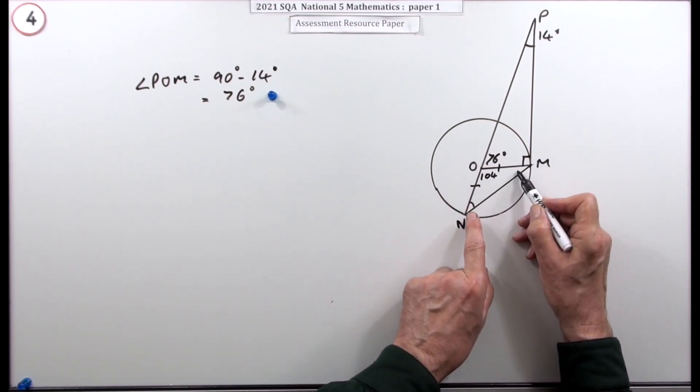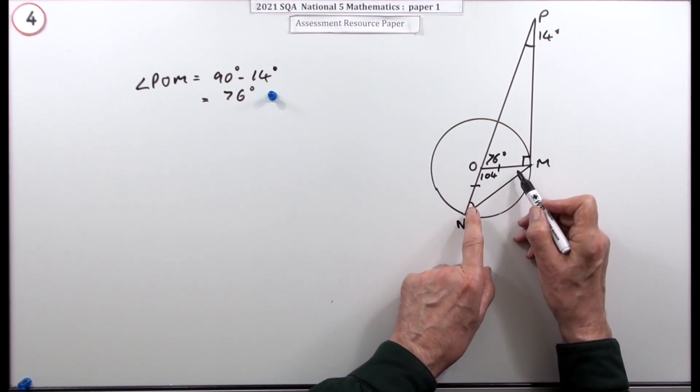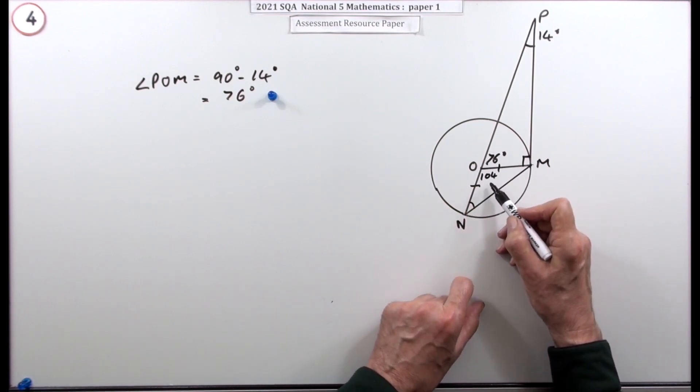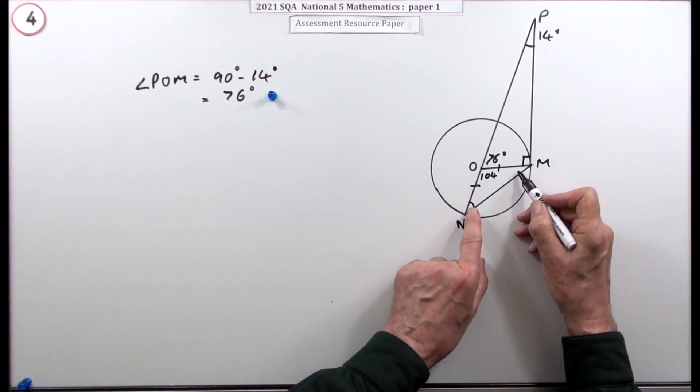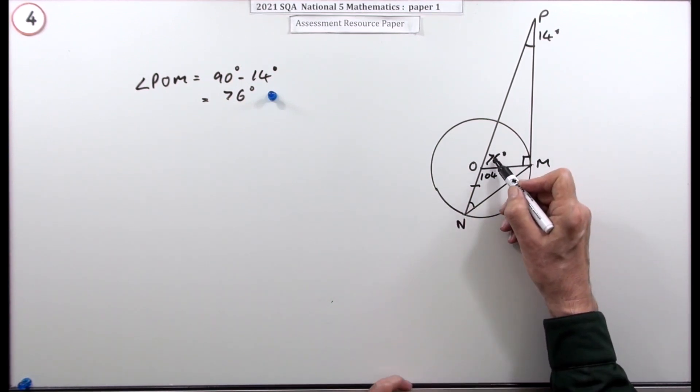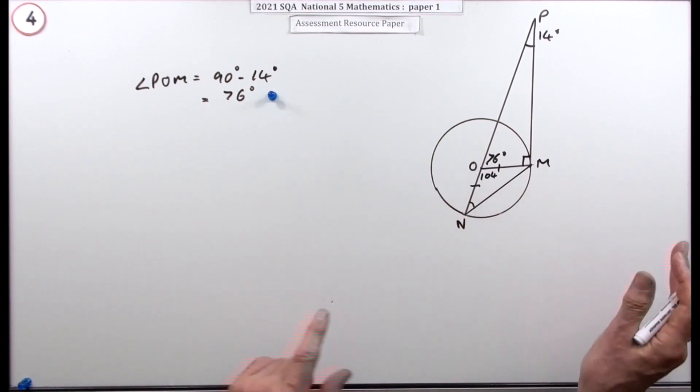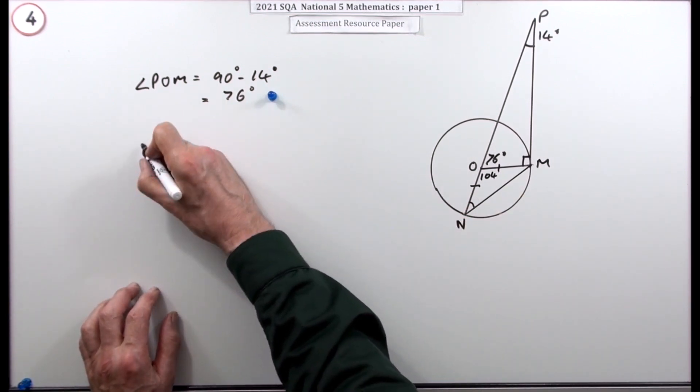So these two angles must add up to whatever makes 180—in other words, that's the supplement, which takes you back to 76. So these two angles here turn out to be the same as that one.